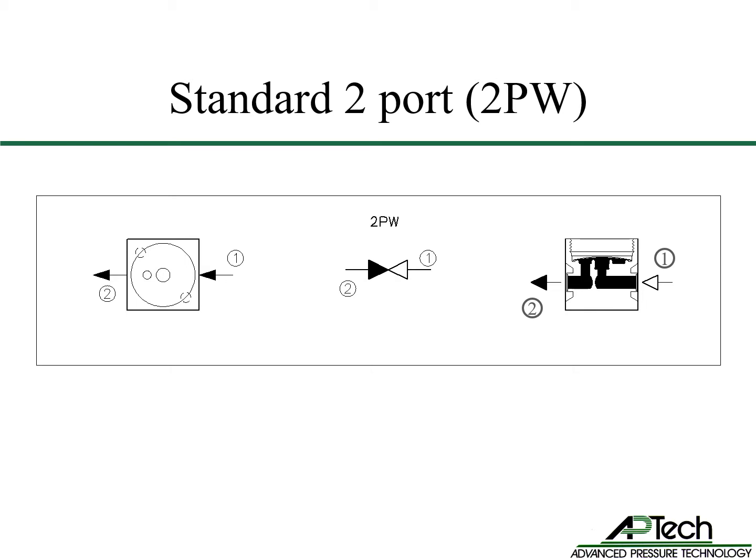The schematic in the middle shows inlet port 1, an open triangle, and outlet port 2, a solid triangle. The sectional view drawing on the right has an open triangle representing a port entering the valve below the seat, and a solid triangle representing an outlet port exiting the valve downstream of the seat. All images share the same valve porting.